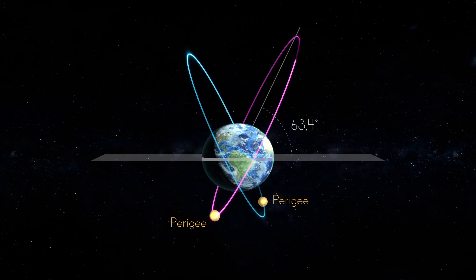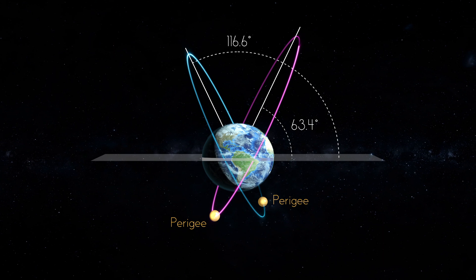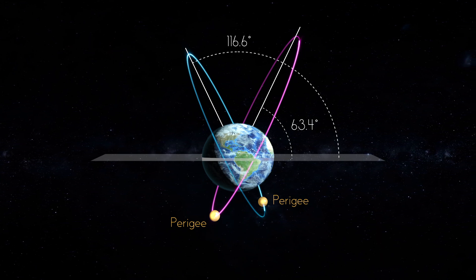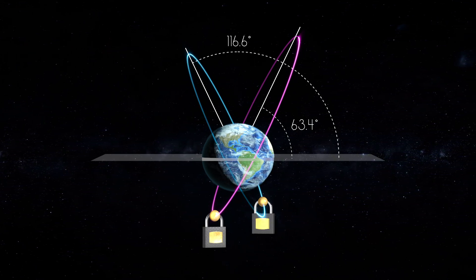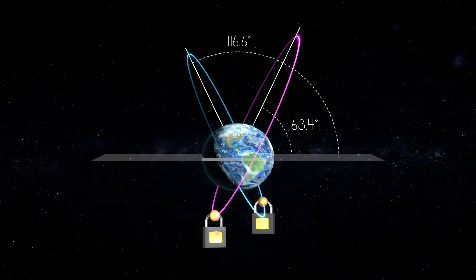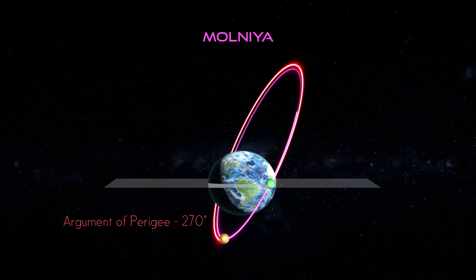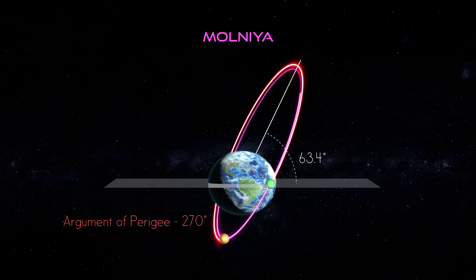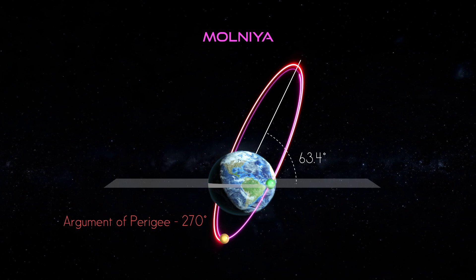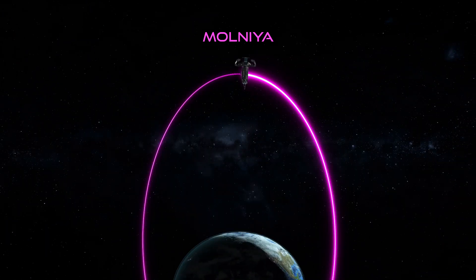There are two inclinations — 63.4 and 116.6 degrees — where perigee rotation is zero. At these inclinations, perigee is locked into its original position. Molniya orbits take advantage of these inclinations to maintain stable orbits, allowing satellites to spend significant amounts of each orbital period over a selected portion of the Earth's surface. Molniya orbits typically have an argument of perigee locked at 270 degrees and an inclination of 63.4 degrees, allowing satellites to spend the majority of their 12-hour orbital period over the Northern Hemisphere.